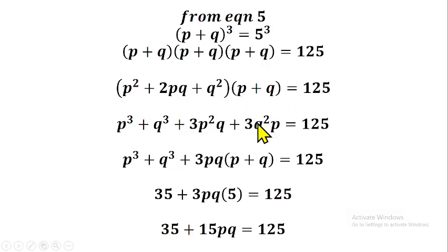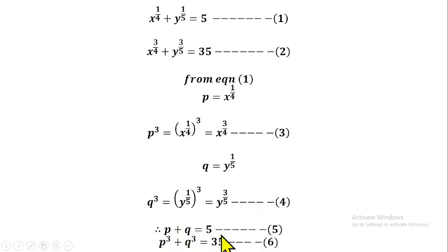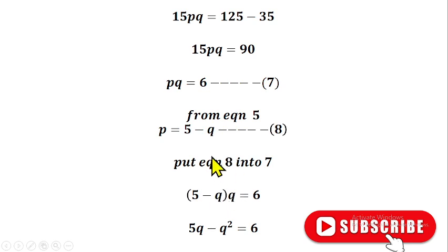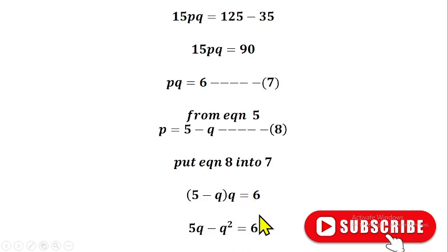From equation five, p plus q equals five, so we make p the subject: p equals five minus q, which we call equation eight. We substitute equation eight into equation seven: (5 minus q) times q equals 6. Opening the bracket: 5q minus q squared equals 6. Rearranging, this becomes q squared minus 5q plus 6 equals zero.